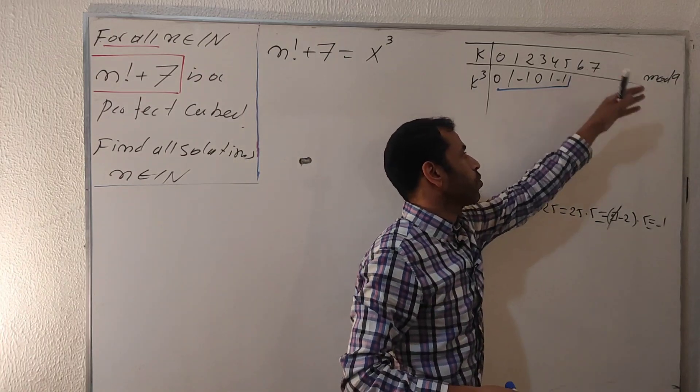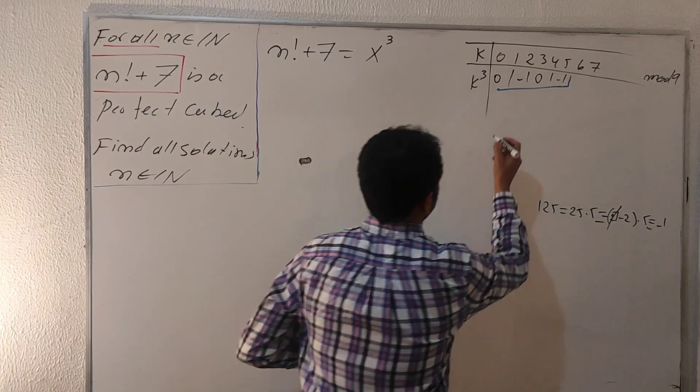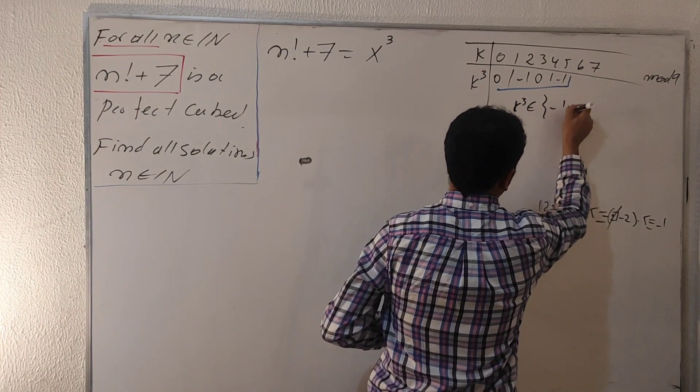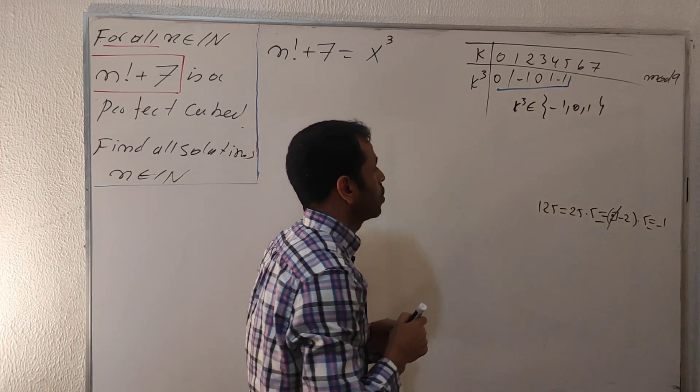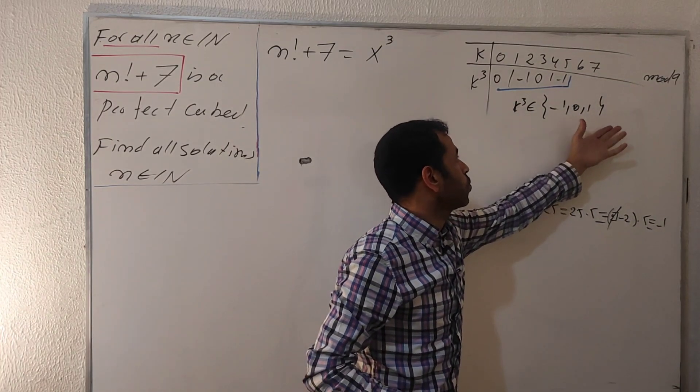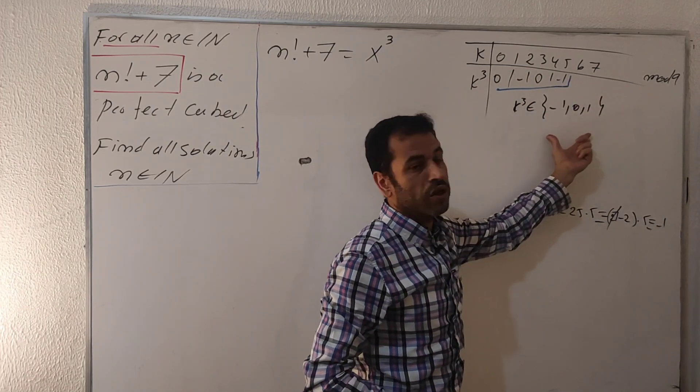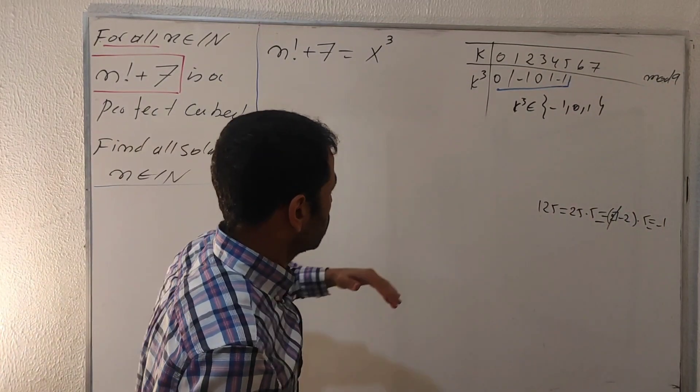This one is going to continue all the way down. So k cubed belongs to this set: we have minus one, zero, one only as a reminder. These are the only reminders when you divide k cubed over nine. You get these reminders: minus one, zero, or one.